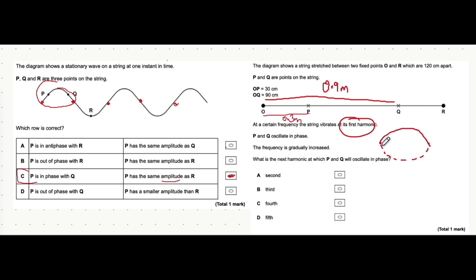Remember that when you draw a stationary wave, you not only draw that incident wave, but the one represented by a dashed line going underneath it. What is the next harmonic at which P and Q will oscillate in phase? If it's initially in phase at the first harmonic, in the second harmonic, you add one node and you add one antinode.